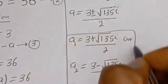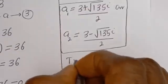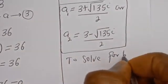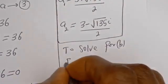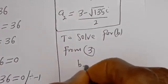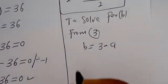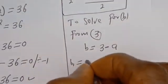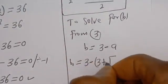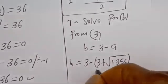We've got the values of a1 and a2. Now let's solve for b1 and b2. To solve for b, from equation 3, b is equal to 3 minus a. So b1 is equal to 3 minus a1, which is 3 minus (3 plus square root of 135i) over 2.